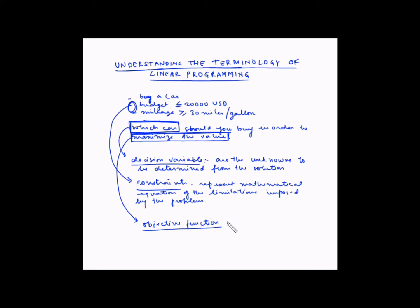We want to buy the car in such a way that the value is maximized — this becomes our objective function. An objective function represents the mathematical equation of the major goals of the system in terms of the unknowns called decision variables. The decision variable — which car to buy — has the objective function of maximizing value, so the objective function must be expressed in terms of the decision variables.